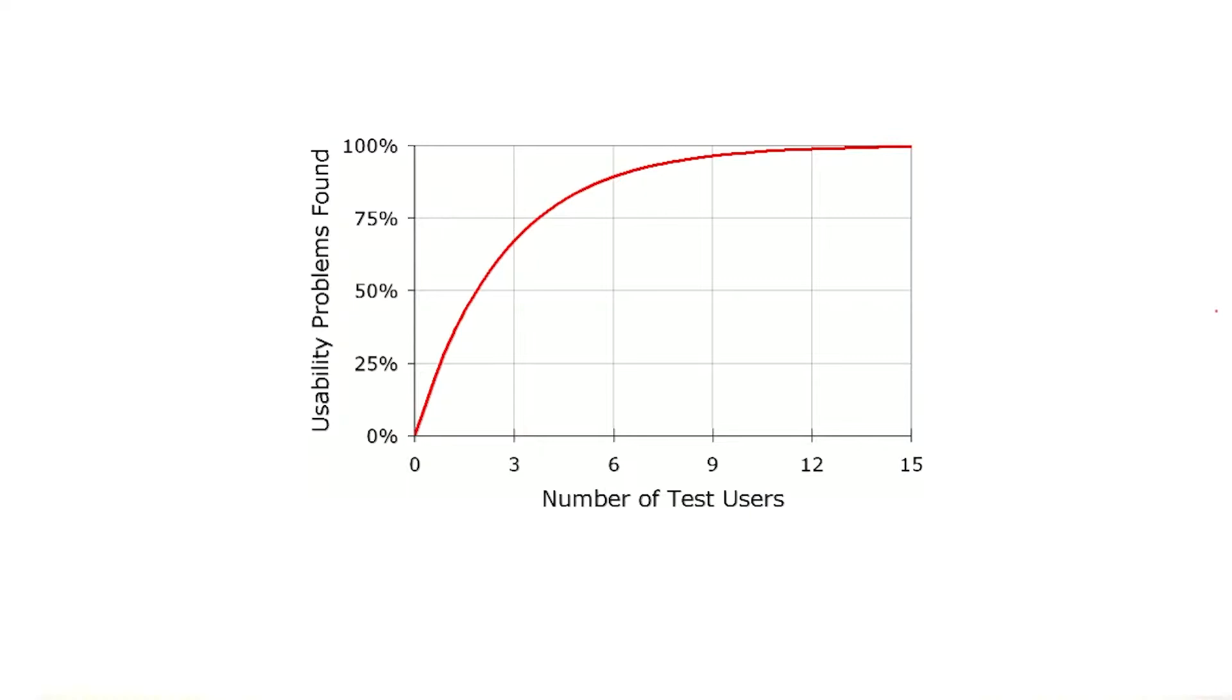Luckily for us, it turns out that we really only need a few people to get good data. Each prototype should be shown to three to five users in order to catch most of the issues in the design.